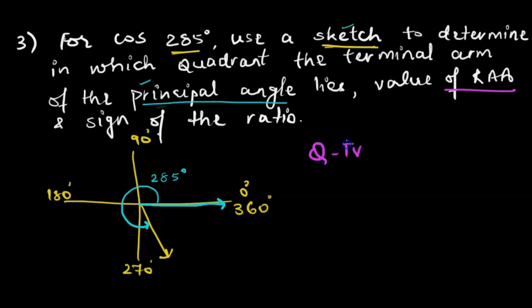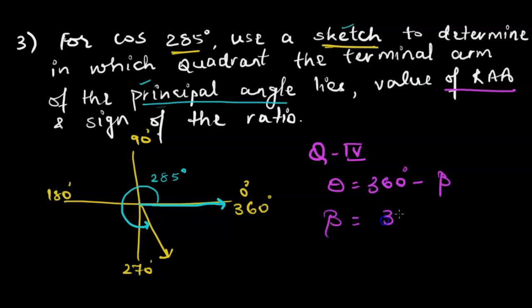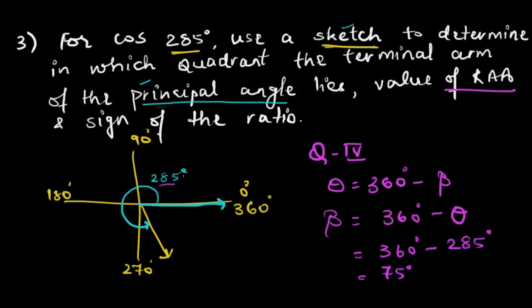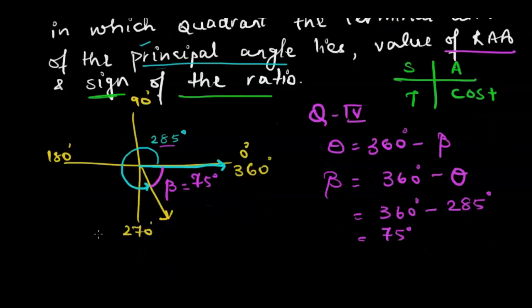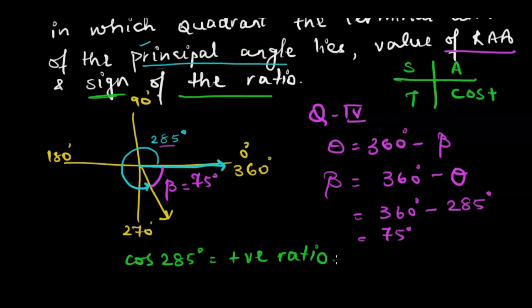We're in the fourth quadrant, so we use the rule: beta = 360 minus theta. Theta is 285 degrees, so beta = 360 minus 285 = 75 degrees. The related acute angle is 75 degrees. Next, we find the sign of the ratio. Cosine 285 degrees is in the fourth quadrant, and according to the CAST rule, quadrant four is the house of cosine, so the ratio is positive. Therefore, cosine 285 degrees is a positive ratio.